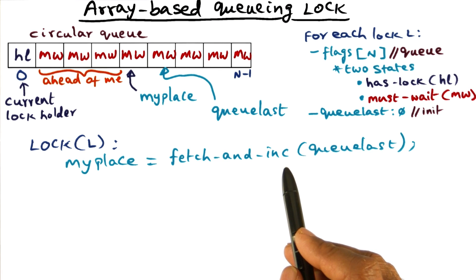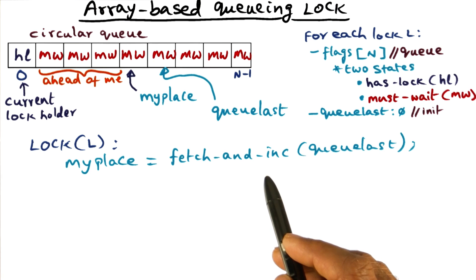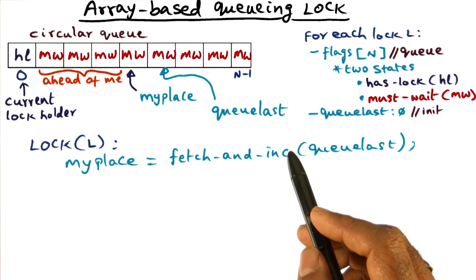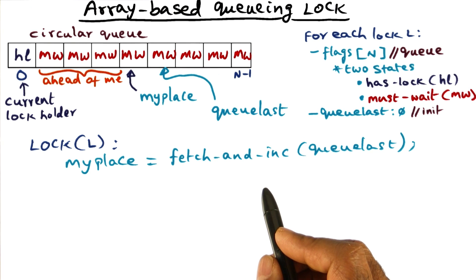And since fetch an increment is an atomic operation, remember that we have read, modify, write operations. Fetch an increment is one of those, and it's an atomic operation. And therefore, even though it's a multiprocessor, there could be multiple guys trying to get the same lock at the same time, they're all going to be sequenced through this fetch an increment atomic operation.